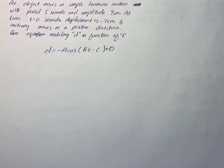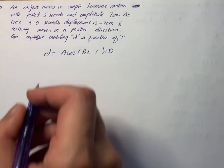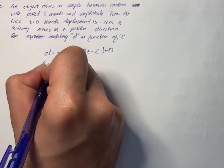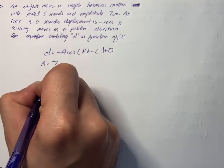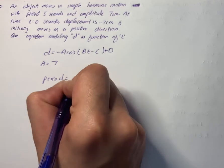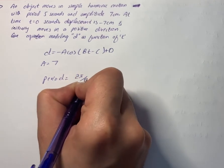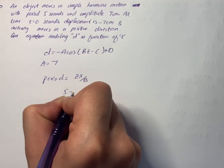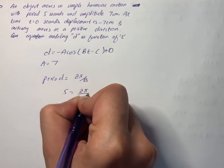The amplitude is given by A. Here amplitude is 7 cm, so A equals 7. We know that period equals 2π/B, so 5 equals 2π/B since the period is given as 5 seconds.